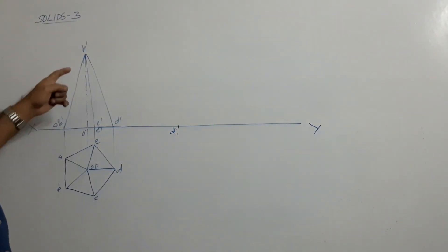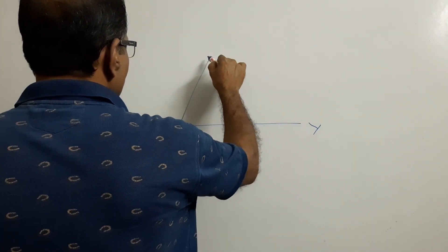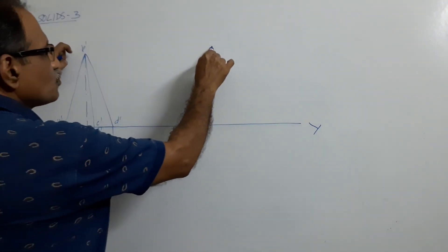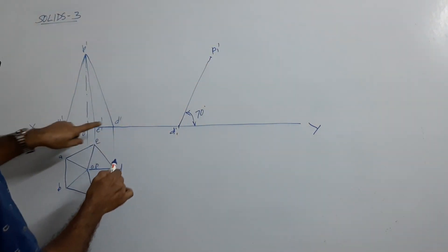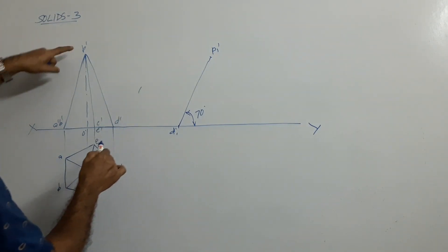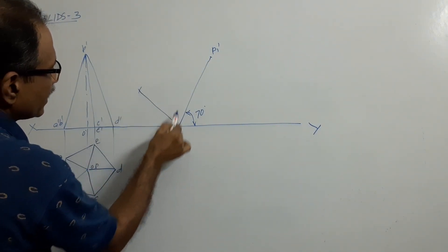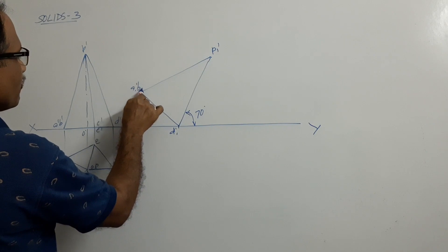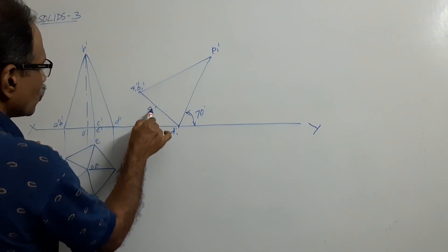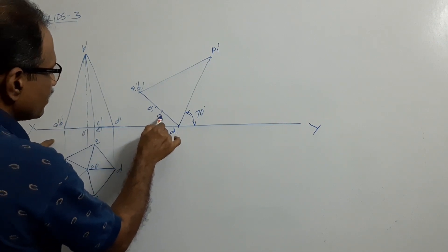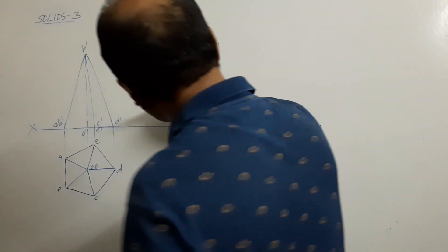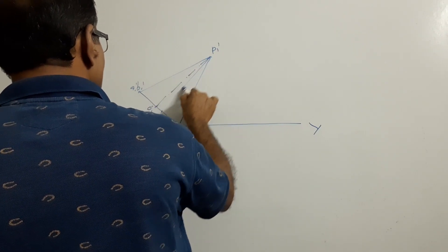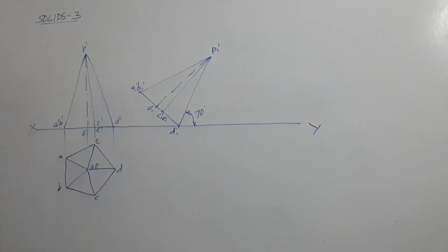You get the base rate roll. This is A1 dash, B1 dash. Locate the subsequent point — this is O1 dash. Locate the other points: C1 dash and E1 dash. Connect the axis and the slant edges.